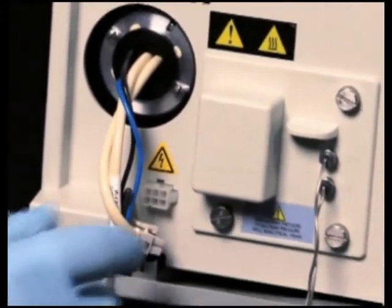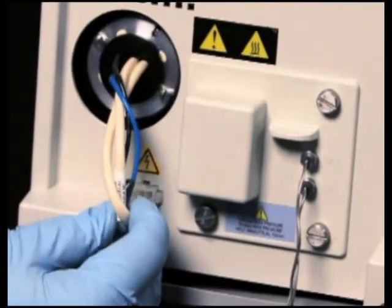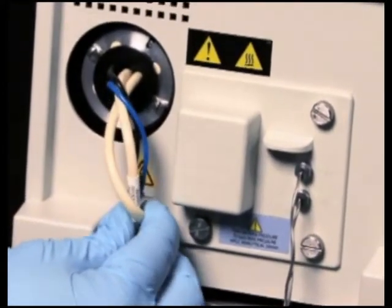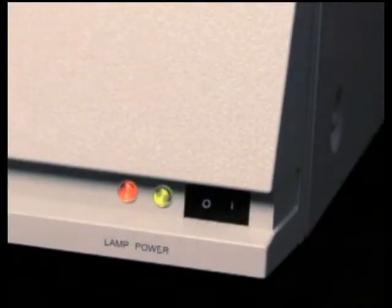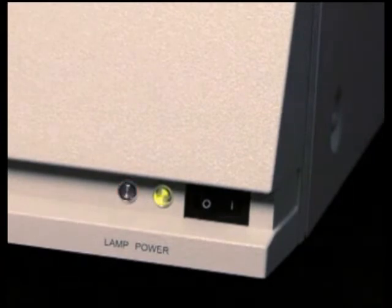Connect the lamp power connector. Reconnect the power cord and power up the detector. Upon power up, the 2998 performs internal diagnostics. When complete, both LEDs illuminate. The lamp LED indicates the new lamp is working.